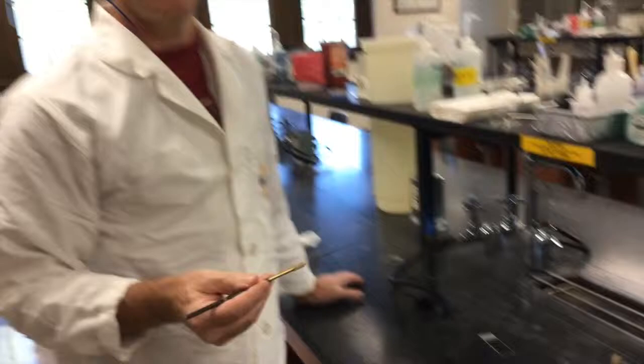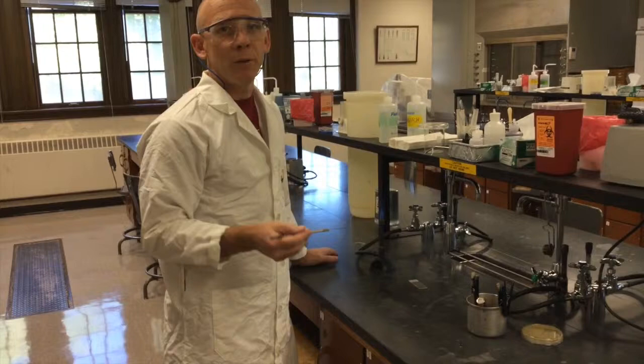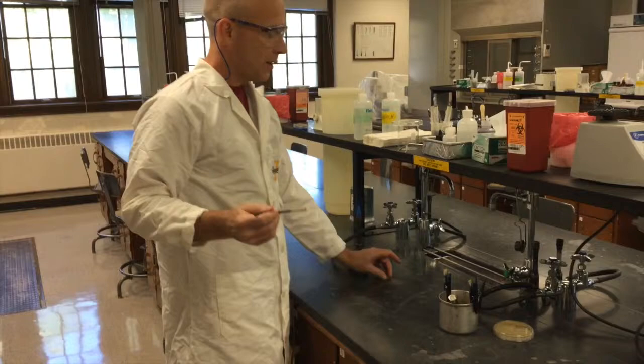Grab yourself an inoculating loop. And I'm going to put on two different kinds of samples: a liquid sample from a broth culture, and a colony from a plate. They're slightly different how you apply them to the slide. We're going to do this aseptically, so you want to work around the flame. Make sure you have all the materials necessary.